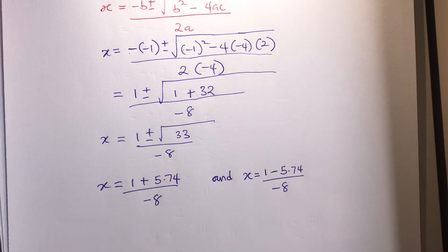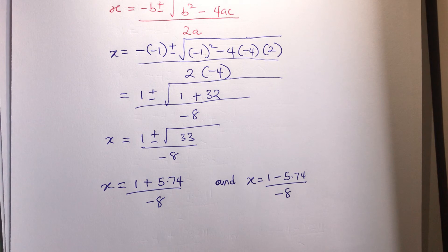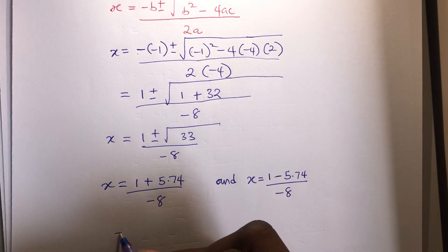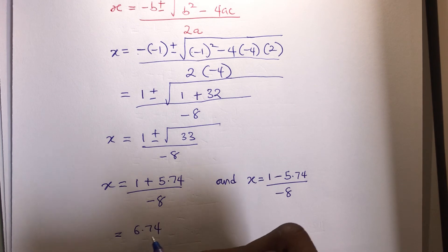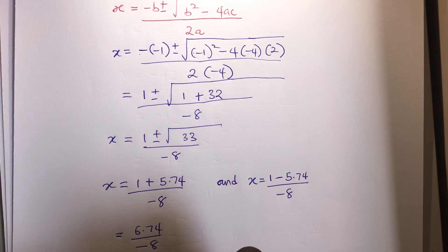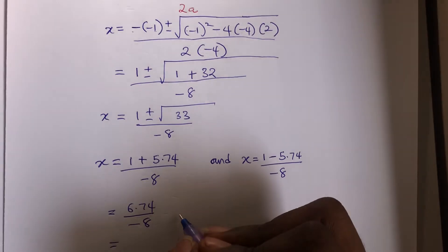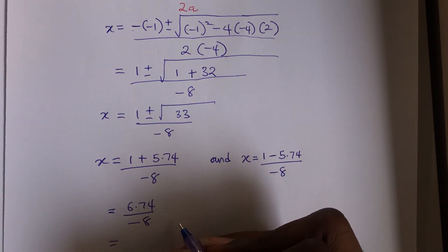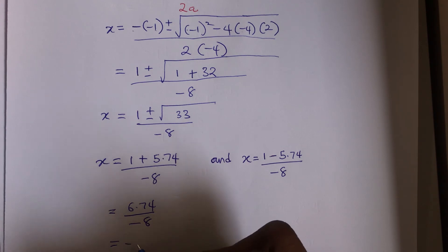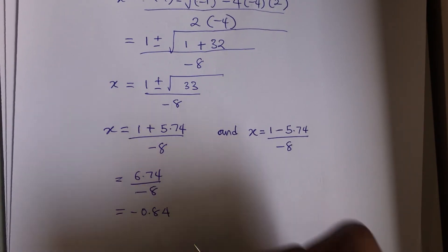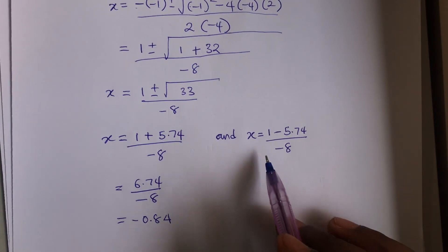Let's finish up with this one. So give you 6.74 over minus 8. And if you press this with your calculator you're gonna get minus 0.84.